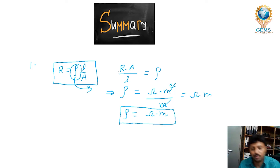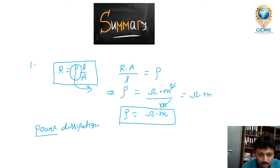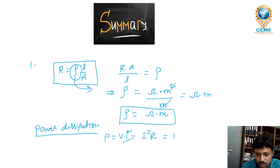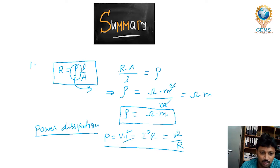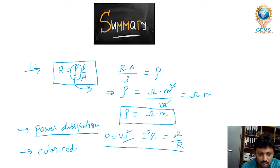We also found the power dissipation through a resistor. The equation for power dissipation is P equals V times I, and also I squared times R, and also V squared divided by R. Any of these three formulas can be used to find power dissipation in a resistor. We also found the resistance value using the color code.